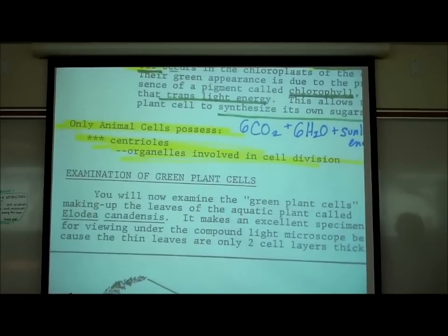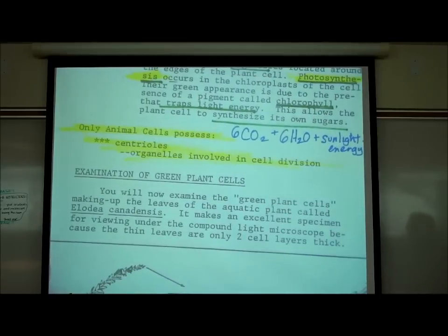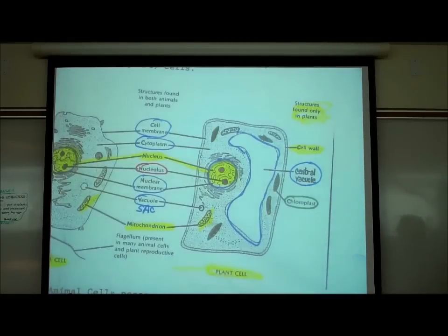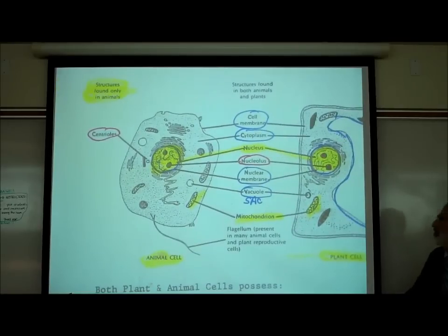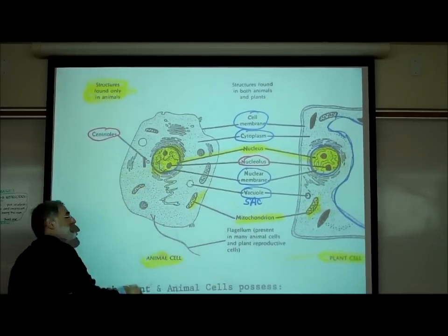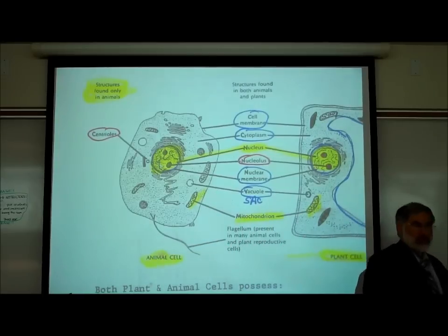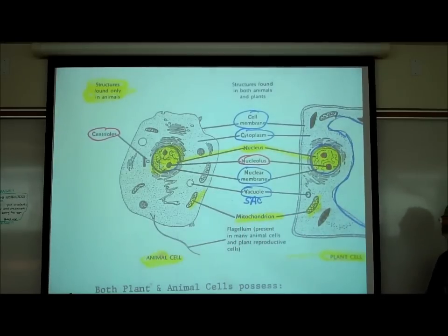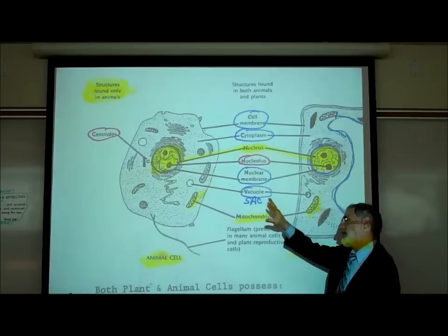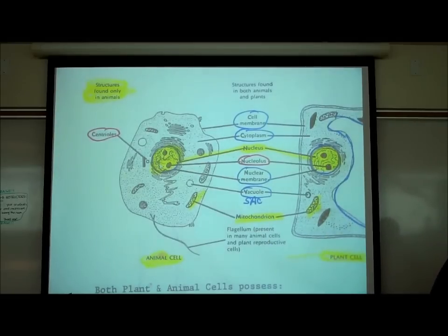There is one unique structure found in animal cells, including human cells, that's not found in plant cells — it's called a centriole. Centrioles play a key role in cell division of animal cells, including the way human cells divide.